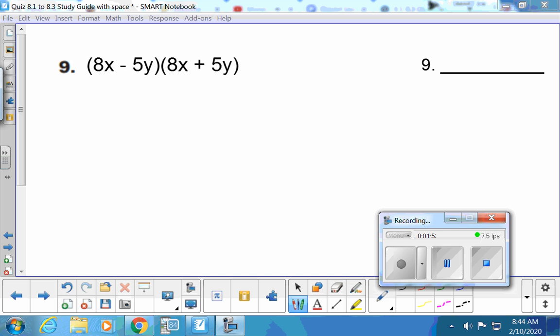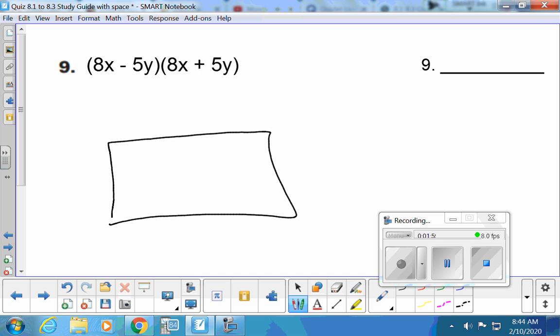All right. I asked the class if they want to do box or rainbow, and they said let's do box because we did rainbow in the last one. I agree. But if you want to do rainbows, do them. So it's 8x and negative 5y, and 8x and positive 5y. Make sure when you set up your box, you have a negative sign with the 5y on the top. I think that's the biggest thing when people use boxes. They sometimes ignore all the negative signs. You can't do that.